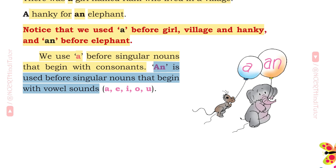Vowel sounds are A, E, I, O, U. Consonants are all the alphabets except A, E, I, O, U.